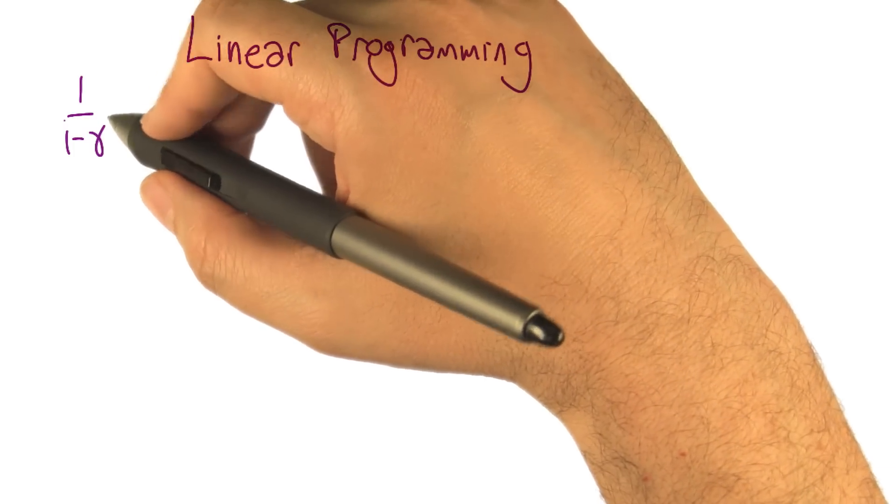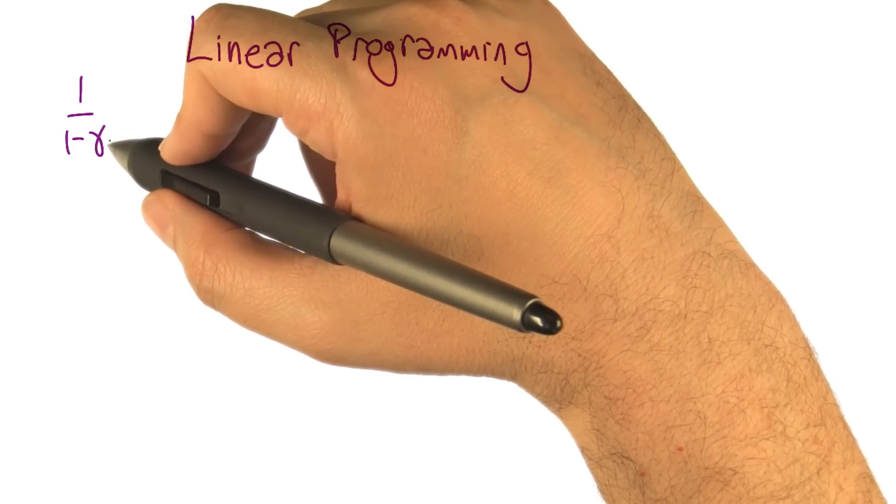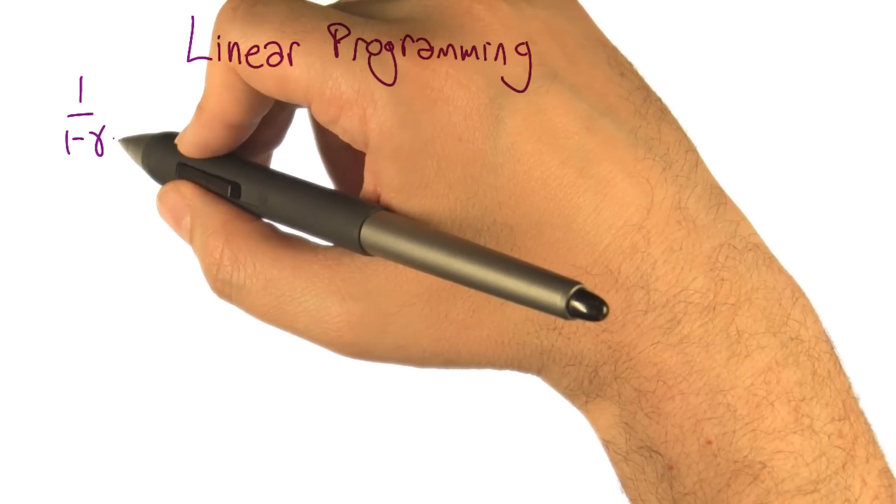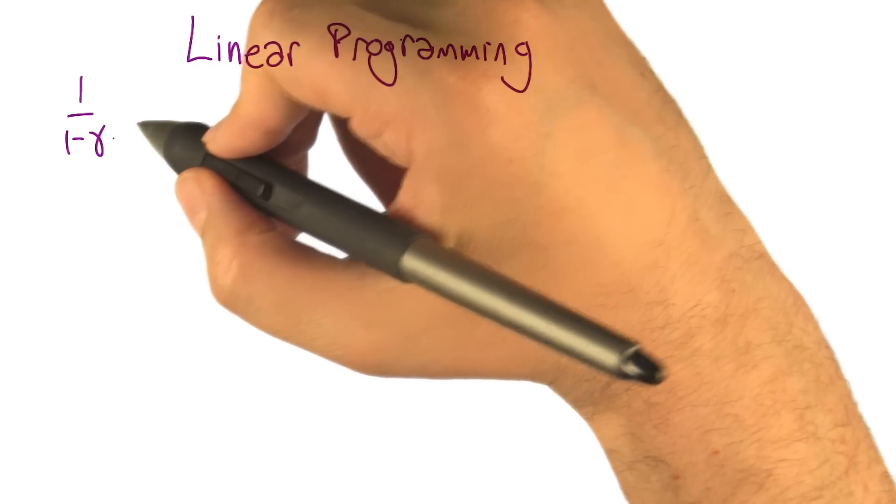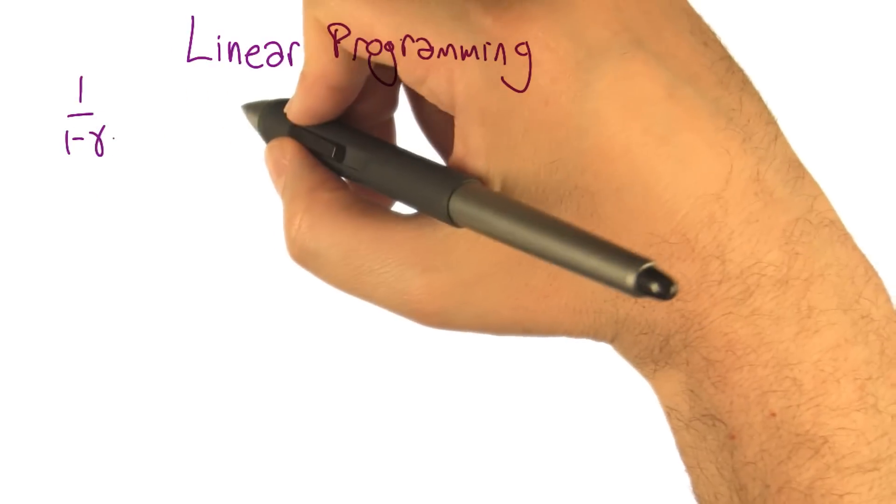So in fact, value iteration doesn't give us a polynomial time algorithm for solving MDPs. There is only one way that we know to solve MDPs in polynomial time, and that is linear programming.